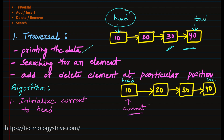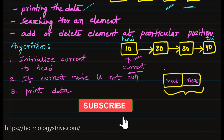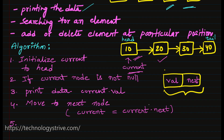If the current node is not null, then print the data. Currently current is pointing at head which is 10, so current node is not null. Step two: check if current node is null or not. Step three: if current node is not null, print the data using current.val. Step four: move our current node to its next node using current = current.next. Once we move to the next node, we repeat the same procedure from step two to four.